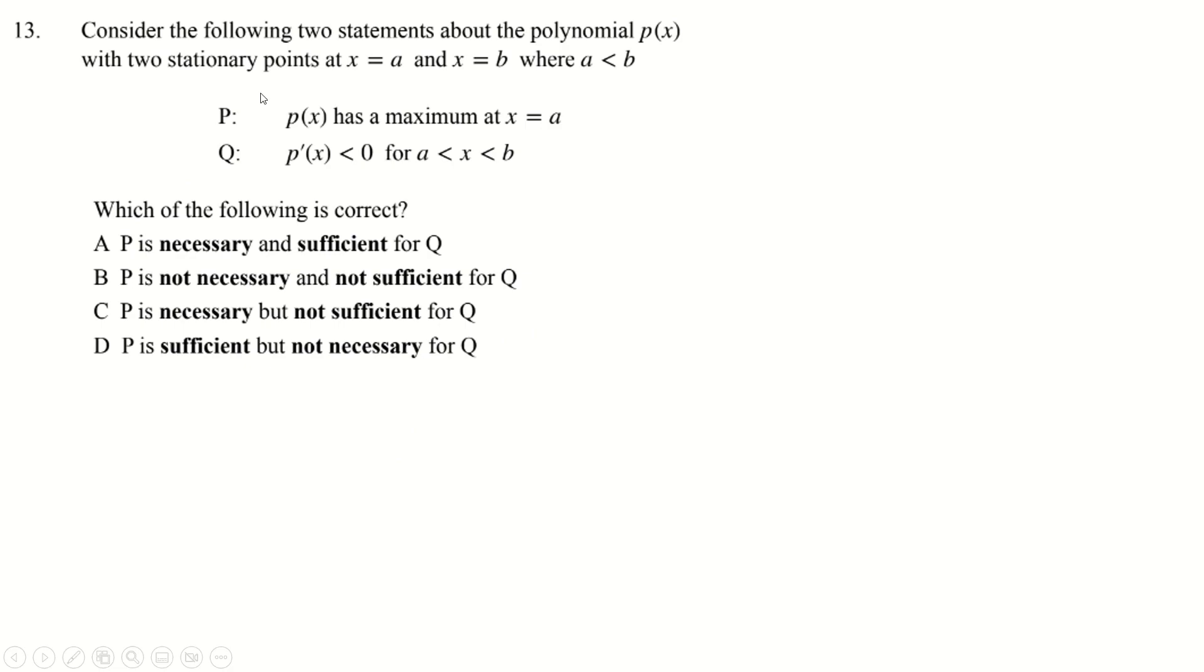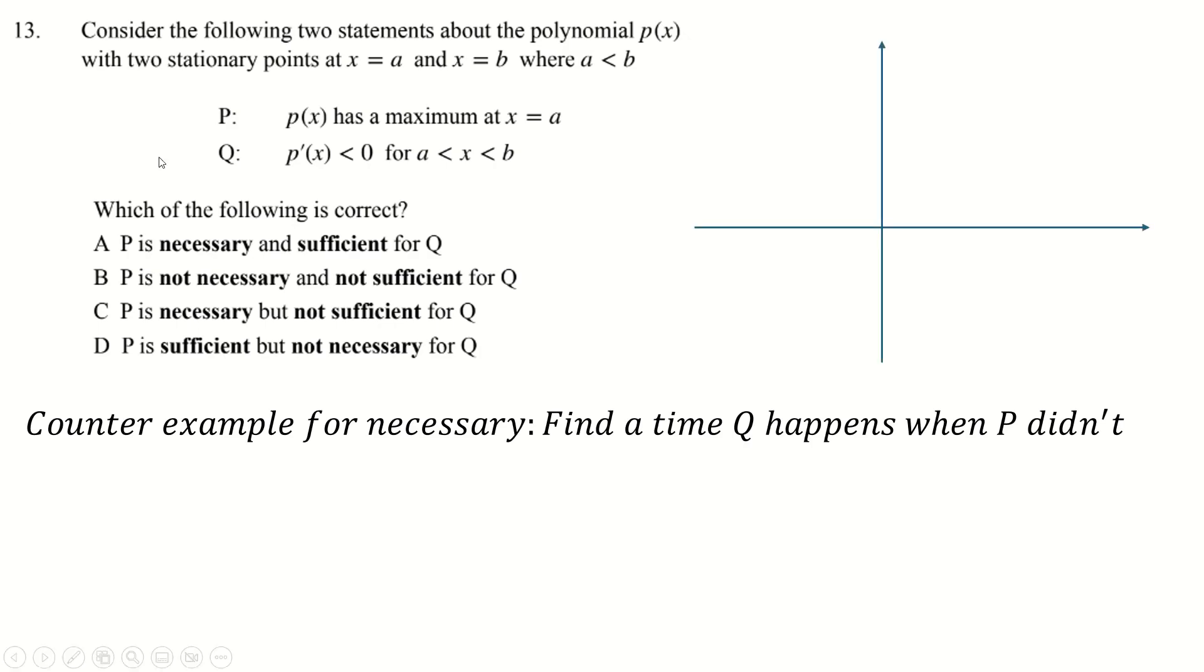Question 13, then. So a little bit ambiguous, this question. But what it means to say is that polynomial P of X has two stationary points, X equals A and X equals B only. You're only allowed those two stationary points, which probably should have said. Otherwise, the answer changes a little bit. But anyway, let's deal with the necessary first. So counterexample for necessary is to find a time when Q happens when P didn't. So therefore, P wasn't necessary because Q happened anyway. So I want this function to be decreasing between A and B, but not to have a maximum of A. And I can do that, right? I can just make an inflection. So it inflects at A, which is a stationary point, so that's satisfied, and then goes down. There should also be a stationary point here at B, but I couldn't be able to draw it. But okay, it's definitely not necessary.